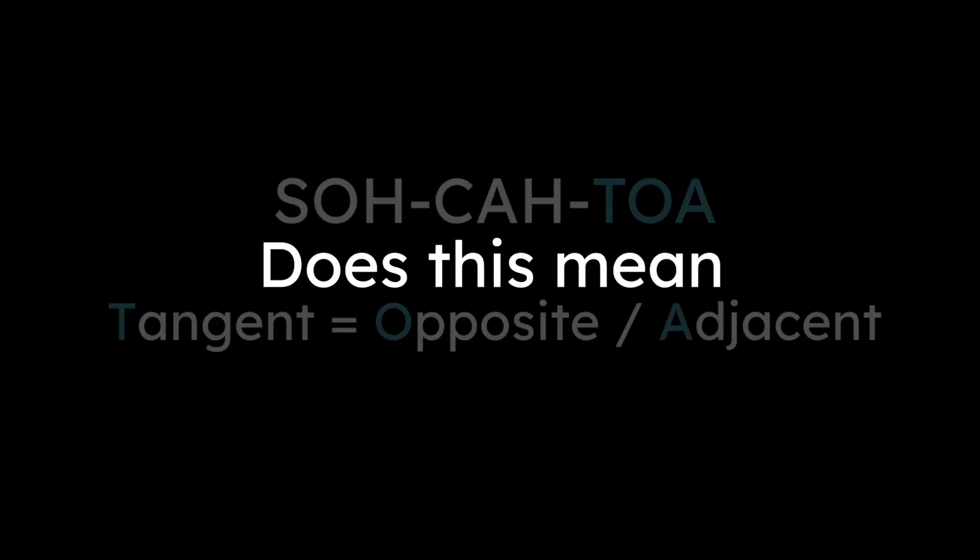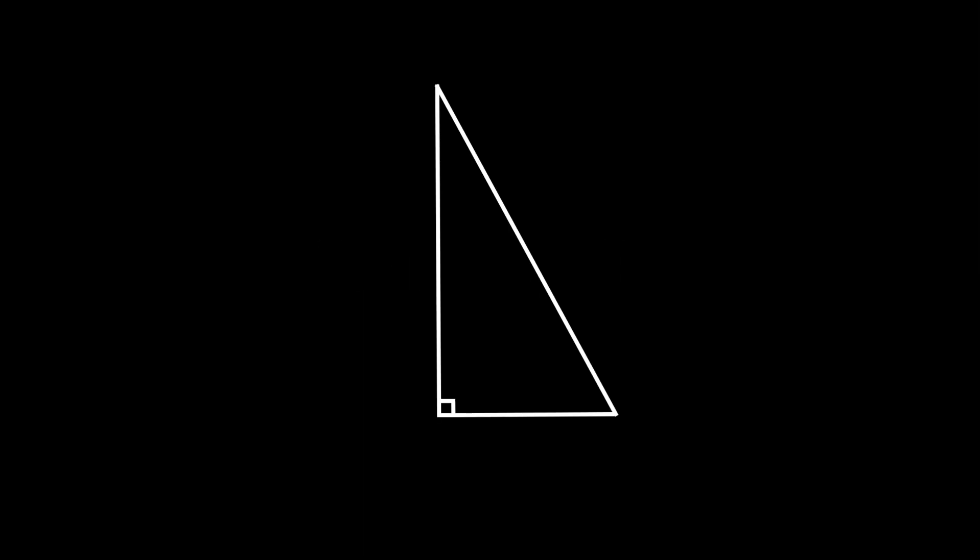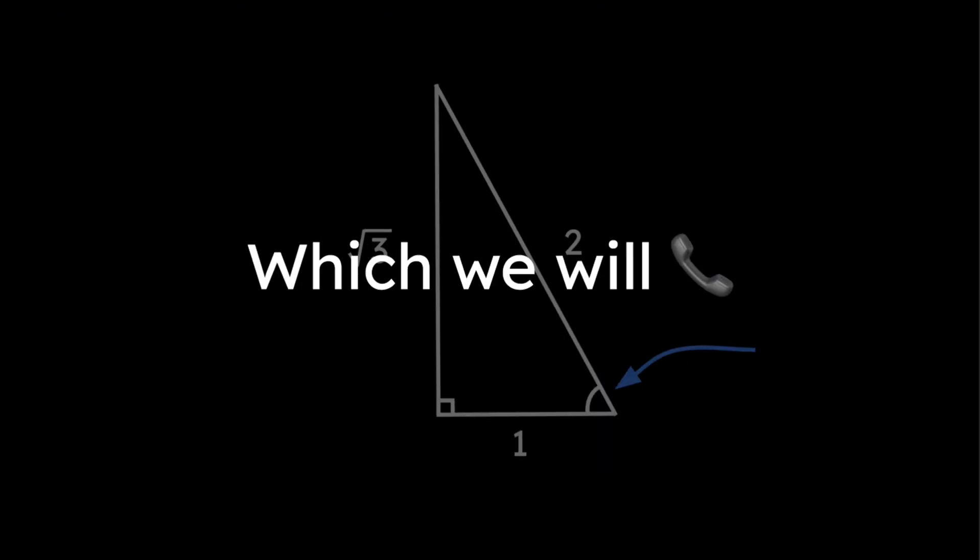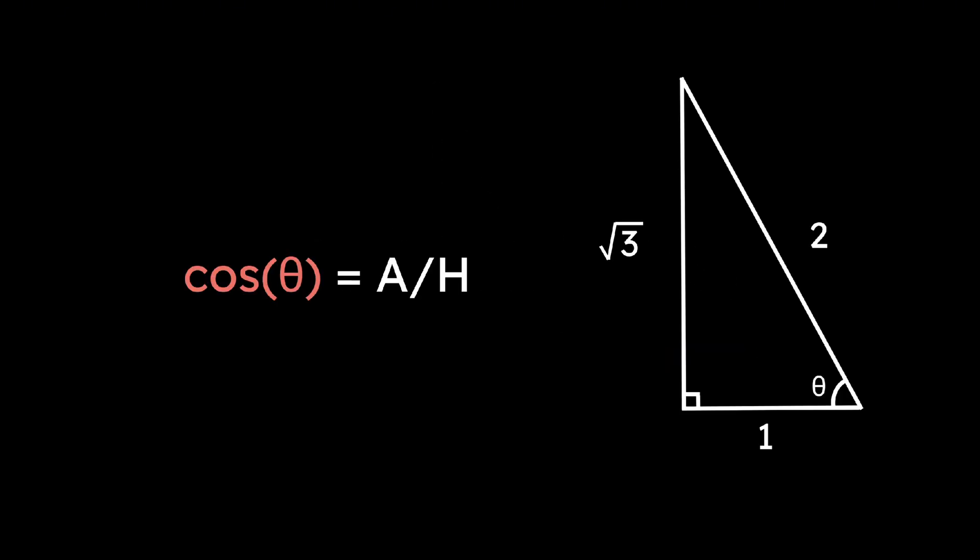What the heck does this mean? For example, if we had a triangle with the dimensions 1, square root 3, and 2, and we are looking at this angle, which we'll call theta, cosine of theta would equal the side adjacent to the angle over the hypotenuse, or 1 half.